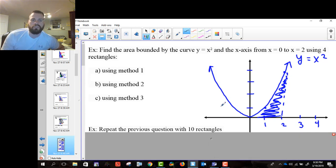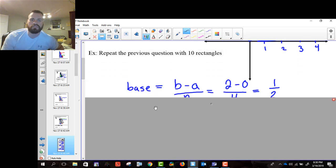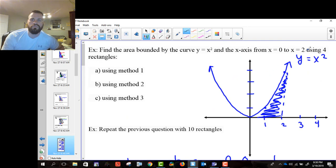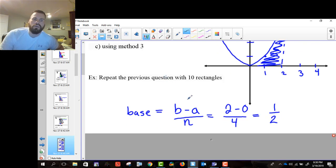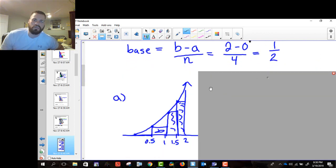If you look at x squared, we want to go from 0 to, we want to use 4 rectangles. So if we use our base first of all, we go b minus a, b is 2, a is 0, and it's divided by n, n is 4. So we get 0.5. Now, with our methods, what we're going to do is the base is 0.5, okay?